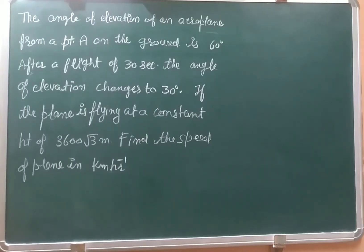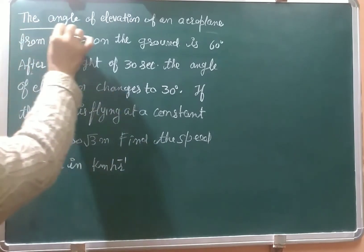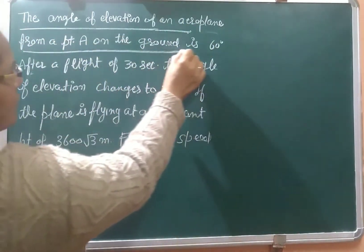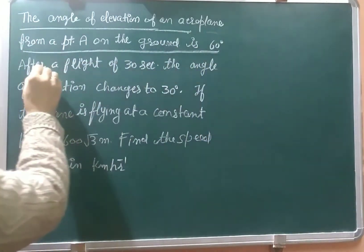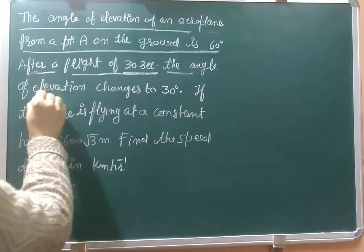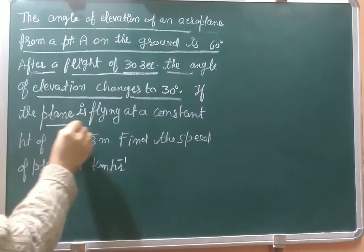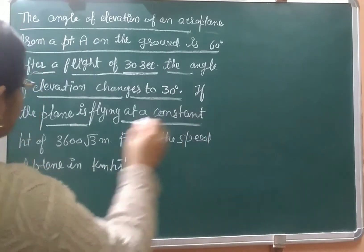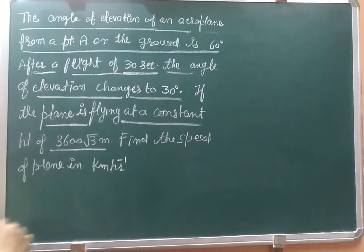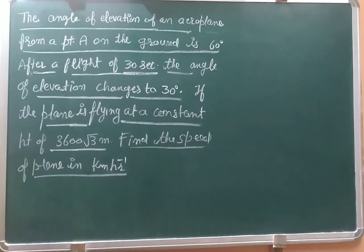Students, this is a previous board exam question — a very very important question. The angle of elevation of an aeroplane from a point on the ground is 60 degrees. After a flight of 30 seconds, the angle of elevation changes to 30 degrees. If the plane is flying at a constant height of 3600√3 meters, find the speed of the aeroplane in kilometers per hour.